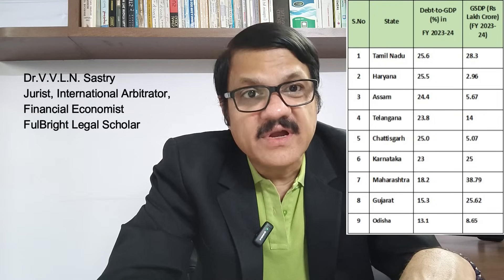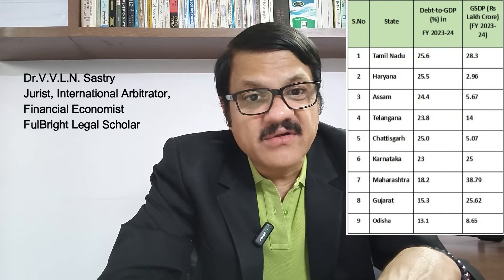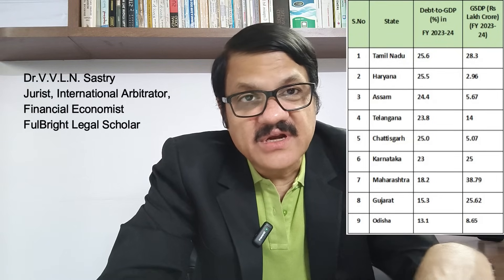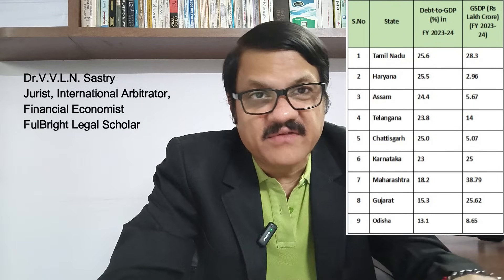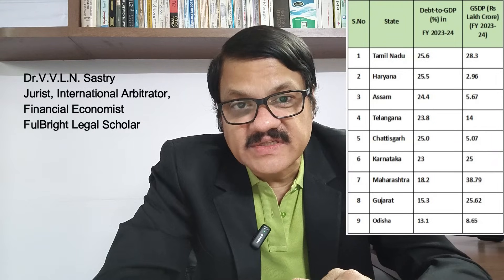The states with manageable debt, having a debt to GDP ratio of less than 25%, number about 9 states in India for the year 2023-24. They are Tamil Nadu with 25.6%, Haryana 25.5%, Assam 24.4%, Telangana 23.8%, Chhattisgarh 25.0%, Karnataka 23%, Maharashtra 18.2%, Gujarat 15.3%, and Odisha 13.1%. Tamil Nadu and Haryana, despite being slightly above 25%, can also be called states with manageable debt.